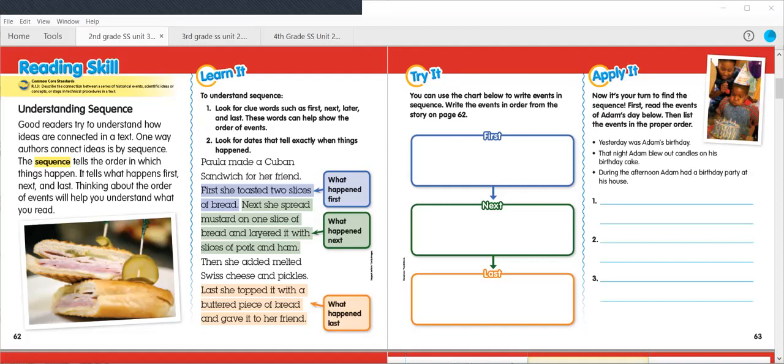Now, for the Apply It section, now it's your turn to find the sequence. First, read the events of Adam's day below, then list the events in the proper order. Things over here might be mixed up. What you need to do is figure out what order they need to be in, and rewrite them in the correct order. Yesterday was Adam's birthday. That night, Adam blew out candles on his birthday cake. During the afternoon, Adam had a birthday party at his house.